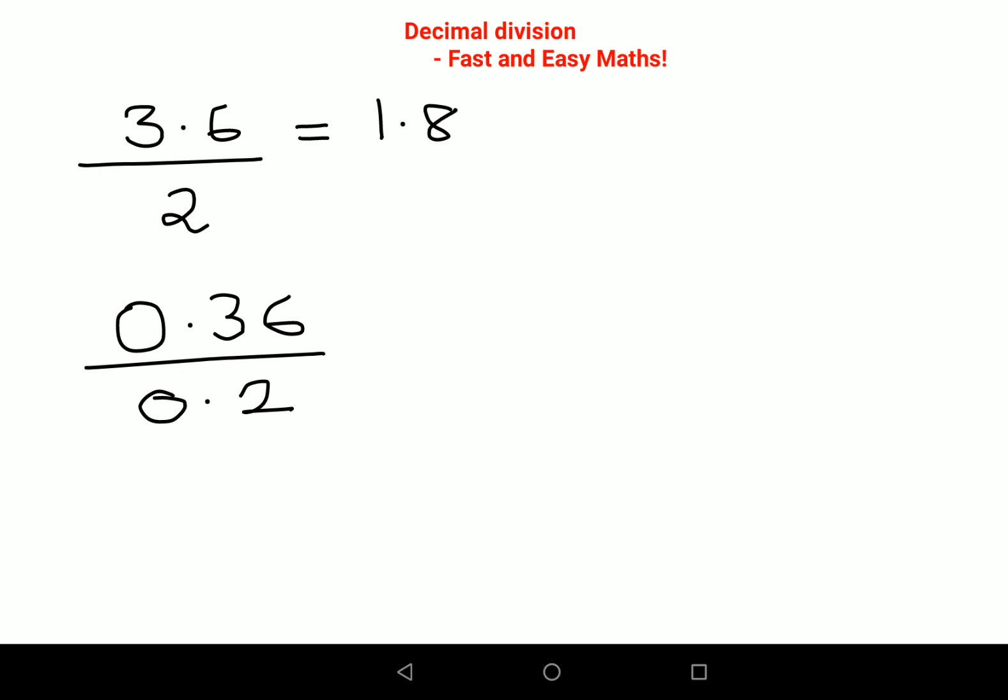No matter if the digits after the decimal are increasing in the numerator or decreasing in the denominator, it doesn't matter. This will work every single time. All you have to do is write this as 36 upon 100 into 2 upon 10. Convert the numerator into fractions, that is 36 upon 100, then convert the 2 as a fraction, so this will be 2 upon 10.